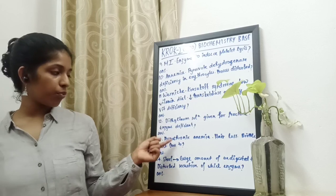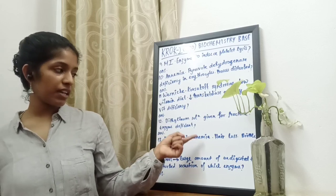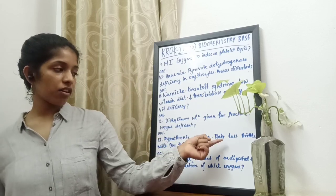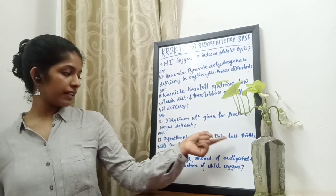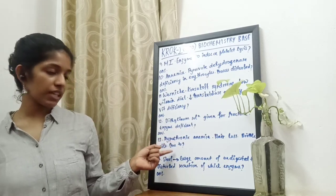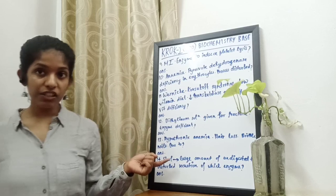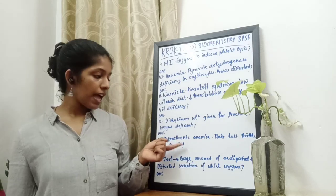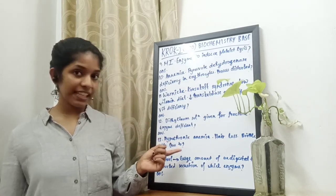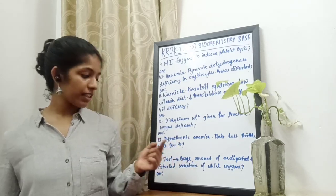The next question: hypochromic anemia, hair loss, and brittle nails are also present. This is due to iron enzyme deficiency — lepsin C.